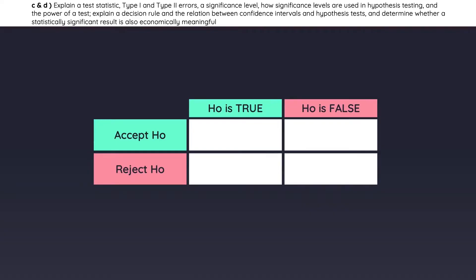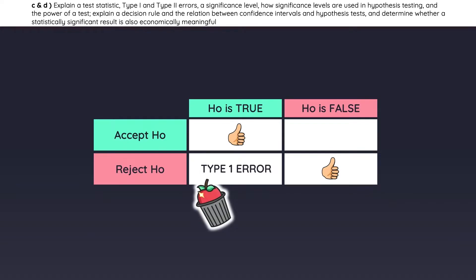Take a look at this table. Ideally, if we do our hypothesis tests correctly, we would accept the null when it is true, and we would reject the null when it is false. If you reject the null when it is true, this is called a type 1 error — think of it like throwing away a good apple; it was good, but you still rejected it. If you accept the null when it is false, this is called a type 2 error — think of it like eating a bad apple; it was bad, and yet you still failed to reject it.